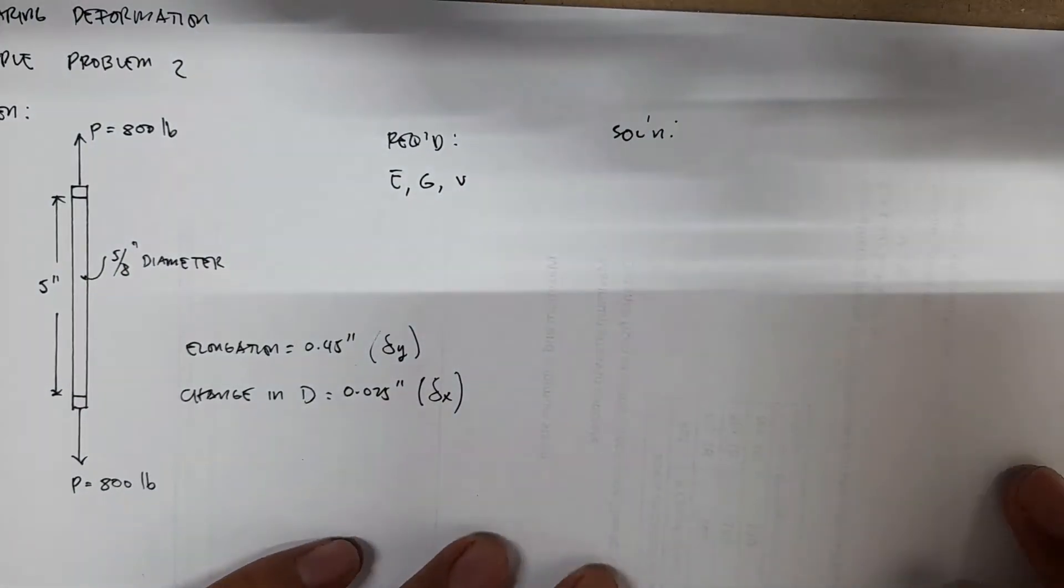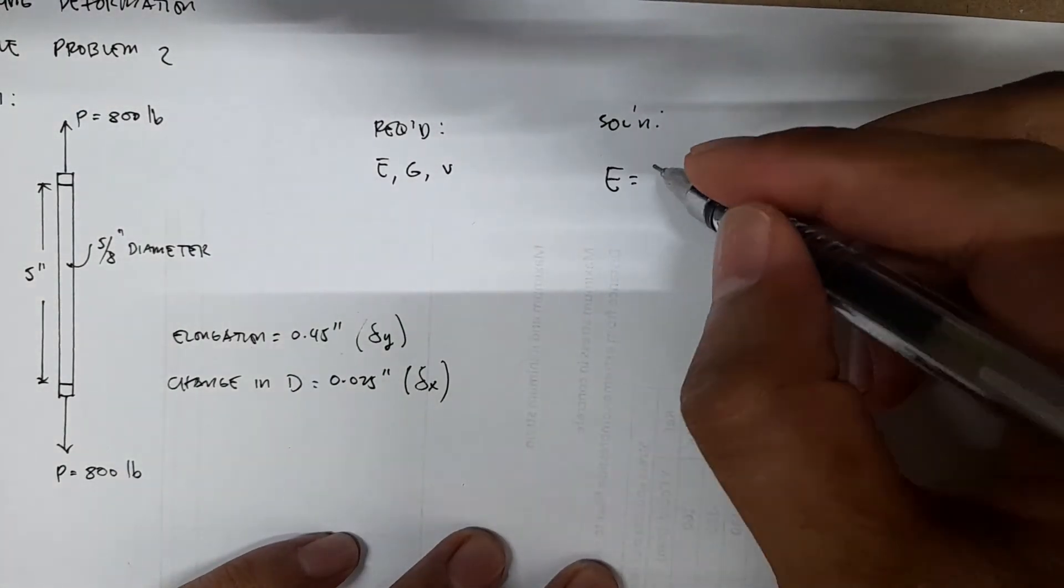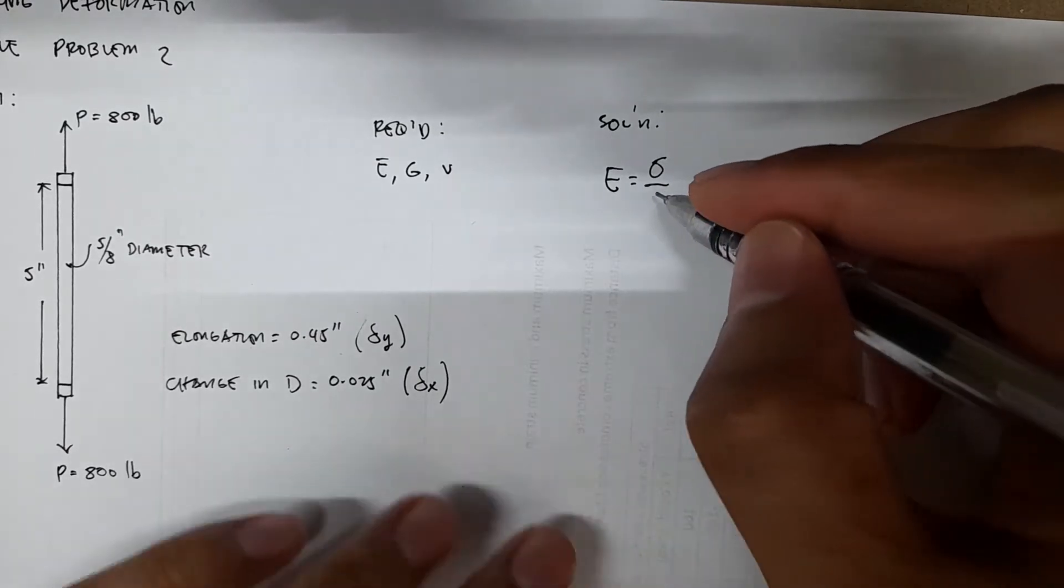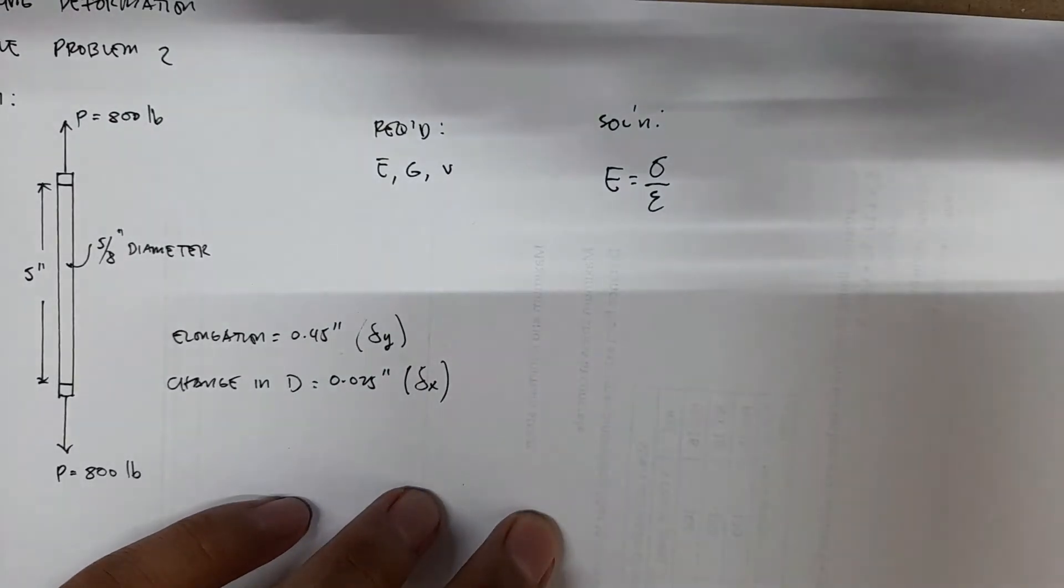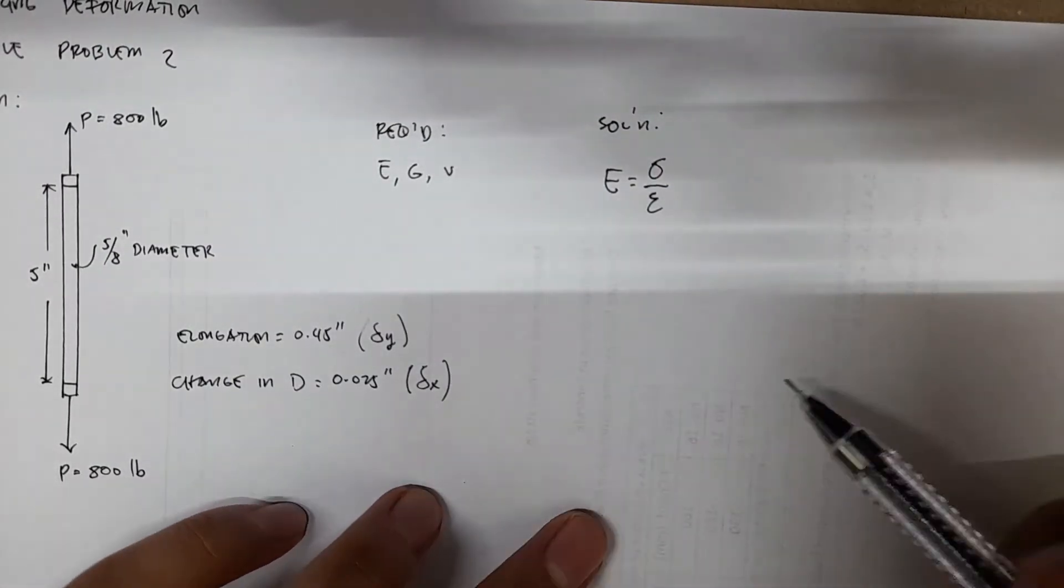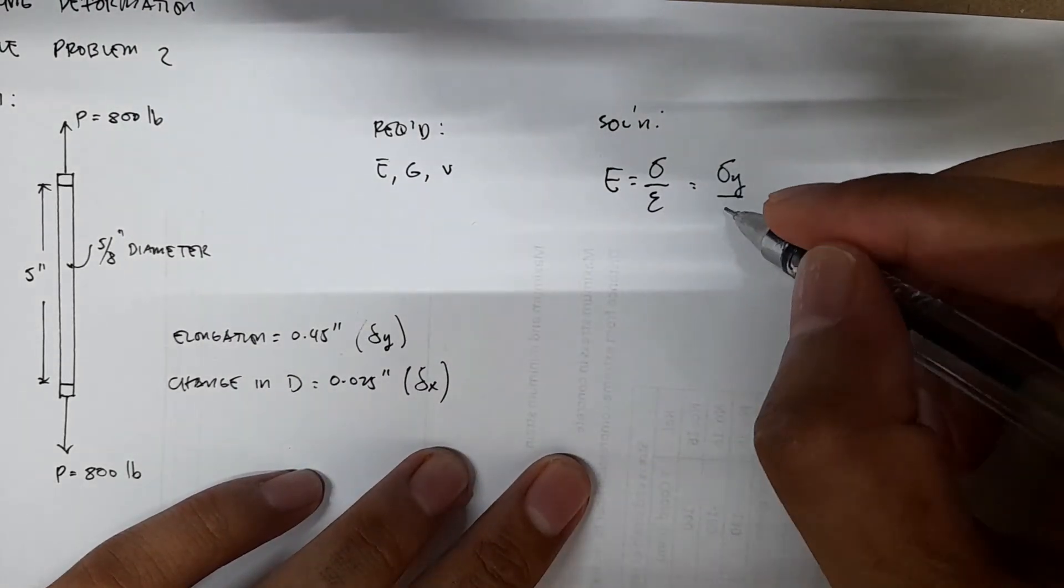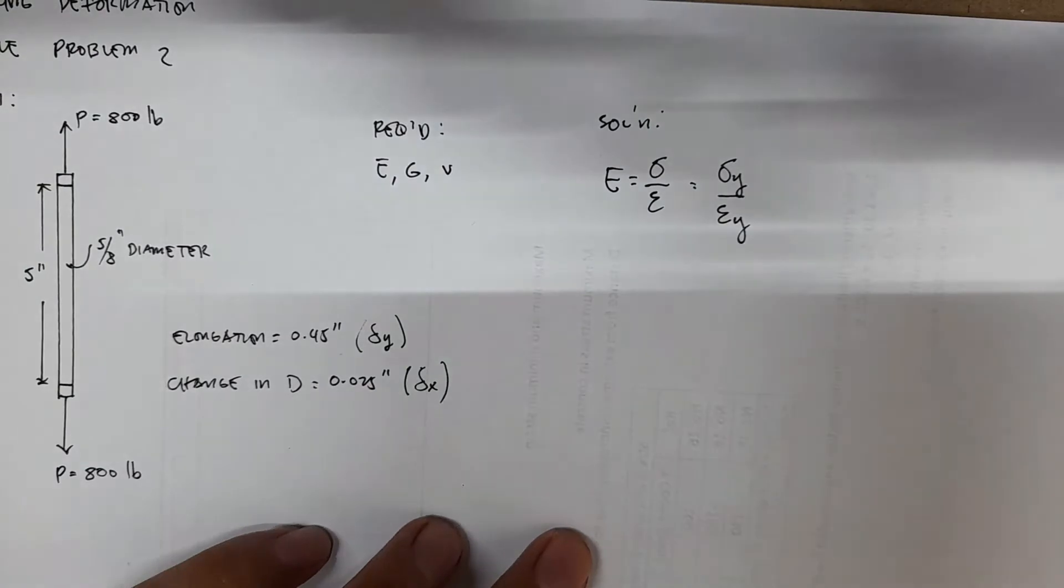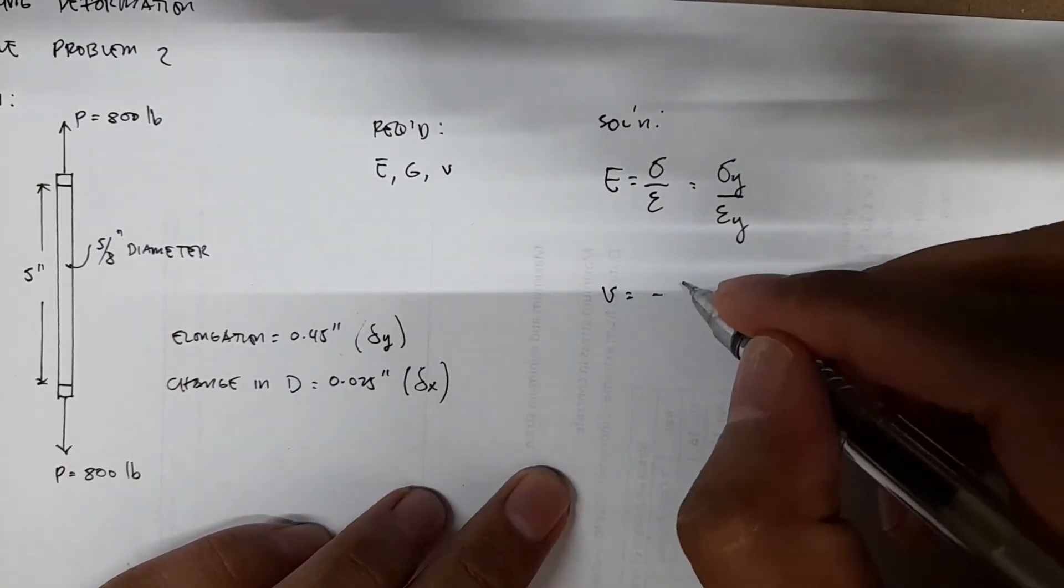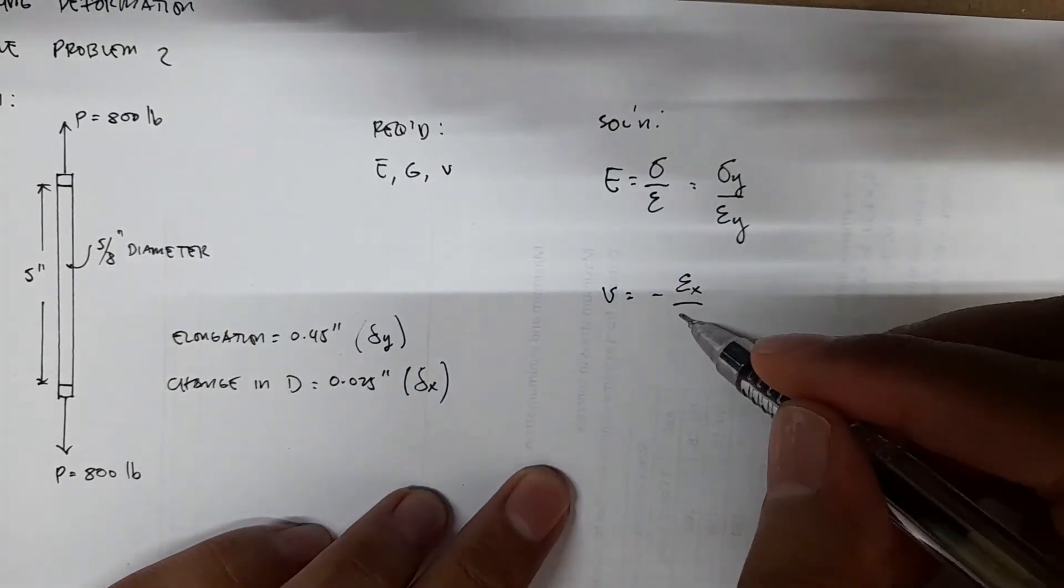Our working equations: the modulus of elasticity equals stress over strain, based on Hooke's law. Since the application of force is in the y direction, you have stress y over strain y. The Poisson's ratio v equals negative, the longitudinal direction is the y direction.